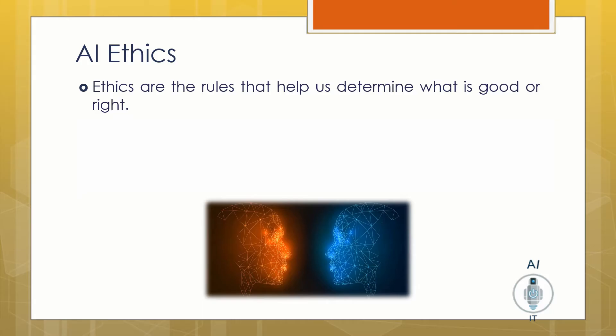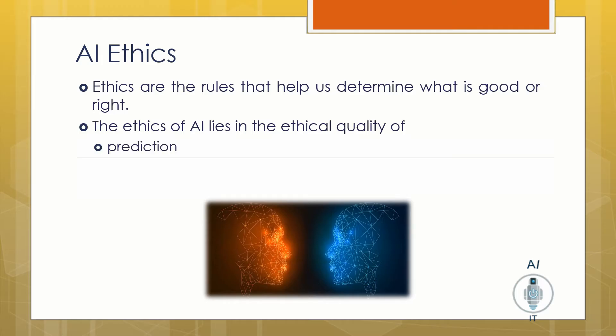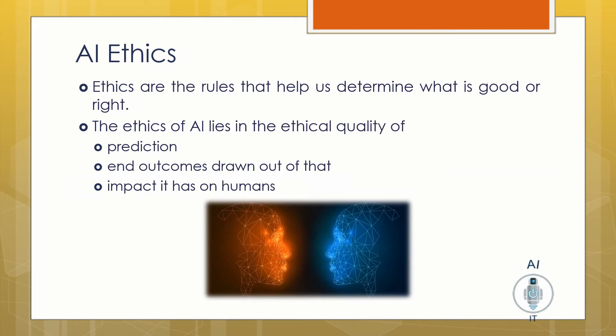Ethics are the rules that help us determine what is good or what is right. The ethics of AI lies in the ethical quality of prediction, the outcomes drawn from that, and the impact it has on human beings. If something goes wrong, a harm is definitely caused — so there lies the need for AI ethics.